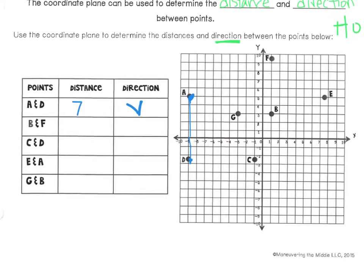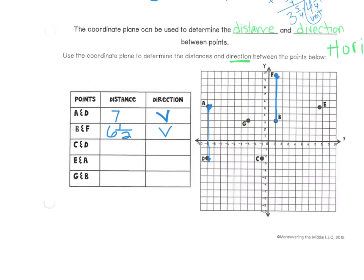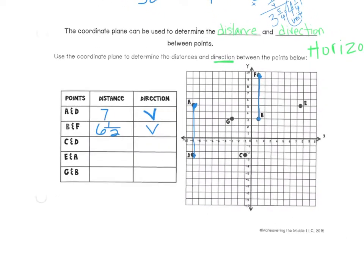Then we have B and F. Here's B and here's F. Those points are vertical and we're going to find the distance between them: one, two, three, four, five, six and a half units between those two. I'm going to let you continue doing this for the last three — pause the video, find the distance and the direction between the points, and then hit play to check and see if you got the correct answer.